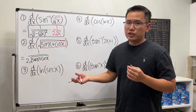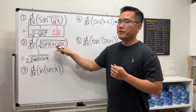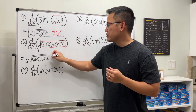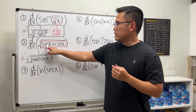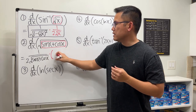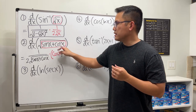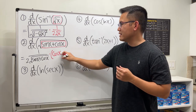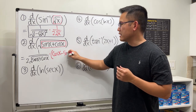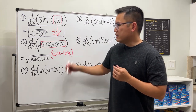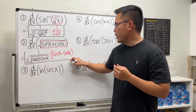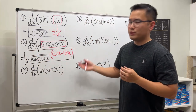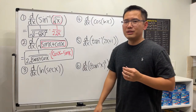Then use the chain rule — we multiply by the derivative of the inside. It has two terms so make sure we open the parentheses. The derivative of sine x is cosine x, and the derivative of cosine x is negative sine x, so minus sine x. That's it — just chain rule one time.